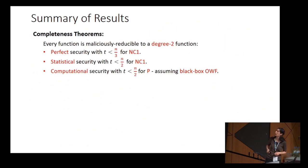To summarize the results, we have the completeness theorem which we derive by plugging in protocols. We get perfect security for threshold n over 3 for functions in NC1, and we can get statistical security if we want security in the honest majority setting. If we want to support any function in P, then we have a computational solution assuming black-box one-way function for any honest majority.